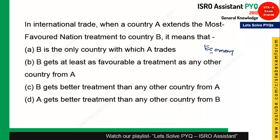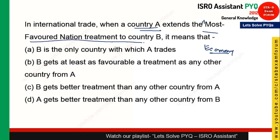The next question is from economy about Most Favored Nation (MFN) treatment. In international trade, when country A extends Most Favored Nation treatment to country B, it means B gets better treatment than any other country from A. So if A, B, C, D are countries and A declares B its most favored nation, B gets the best treatment. Option C is the right answer.